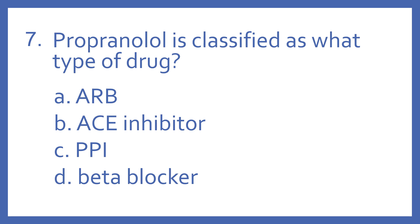Number seven. Propranolol is classified as what type of drug? A. ARB, B. ACE inhibitor, C. PPI, or D. Beta blocker?